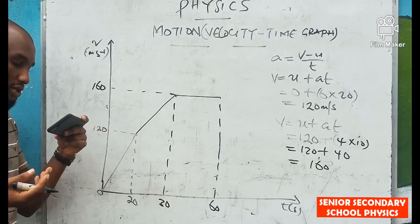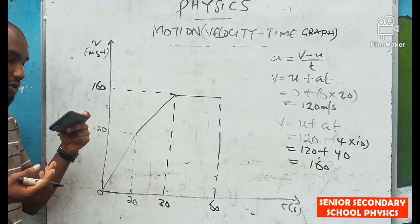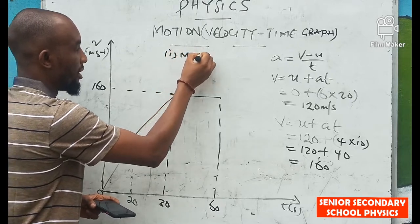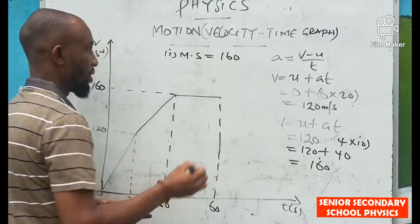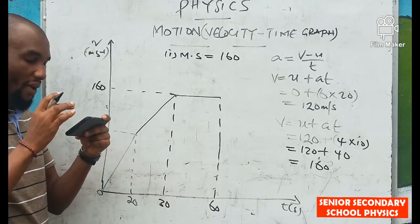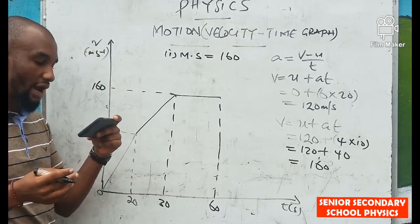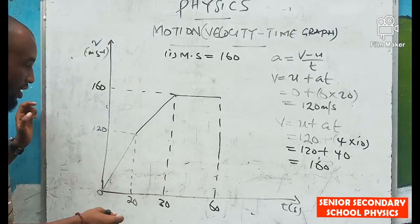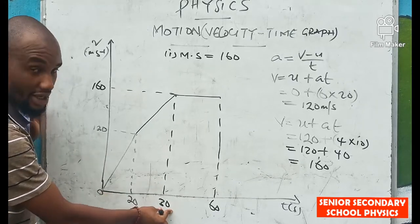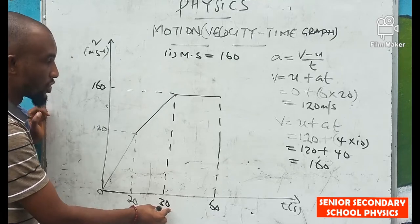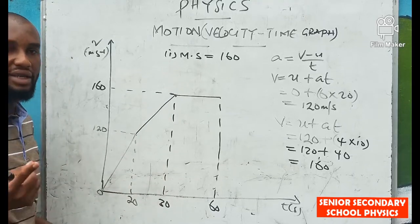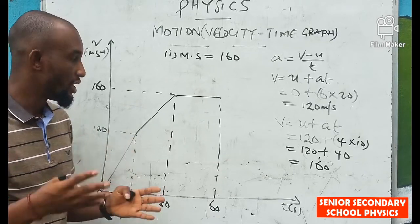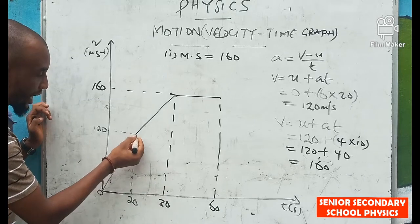From the graph: (i) the maximum speed attained during the motion is 160 meters per second. For (ii), the total distance traveled during the first 30 seconds — from t = 0 to t = 30 — we use the area under the graph. In this region, the shape consists of a right-angle triangle and a trapezium, so we calculate the area of the triangle plus the area of the trapezium.